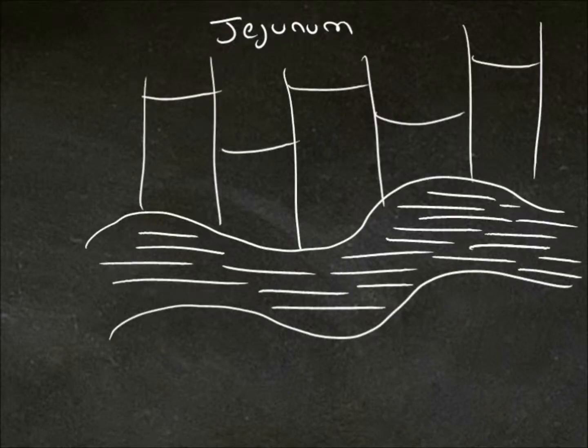So here we have our jejunum, and we've cut it so you can see the transverse folds of the lumen. And we can see that there are quite a lot of them.